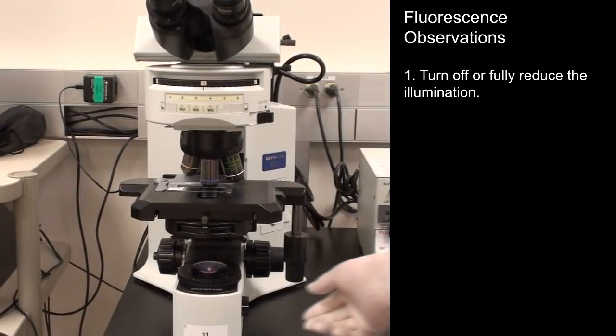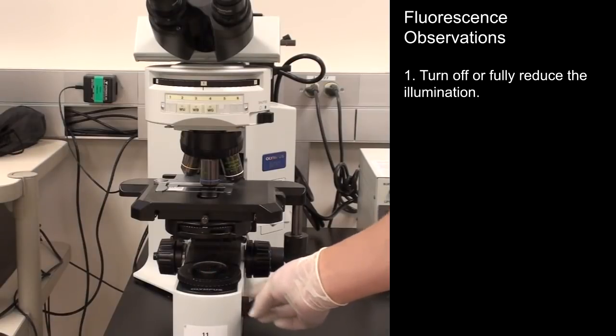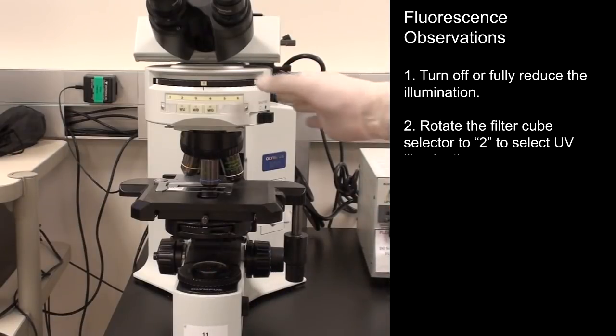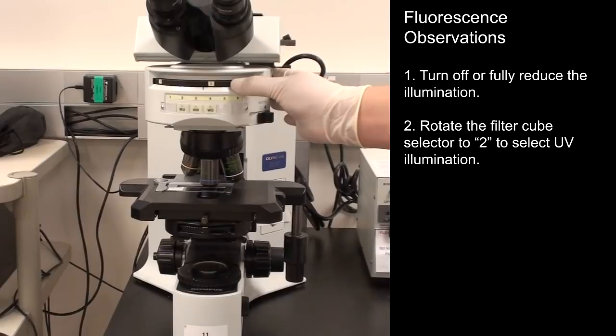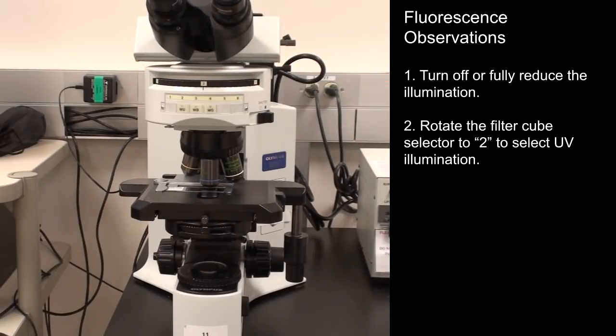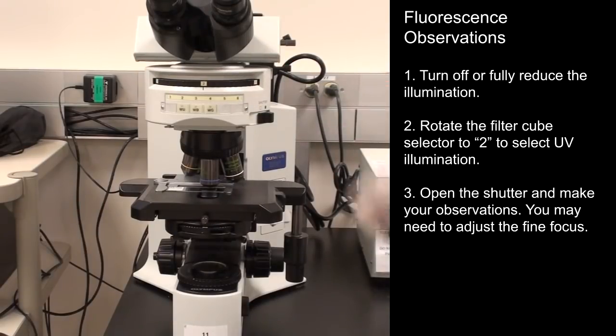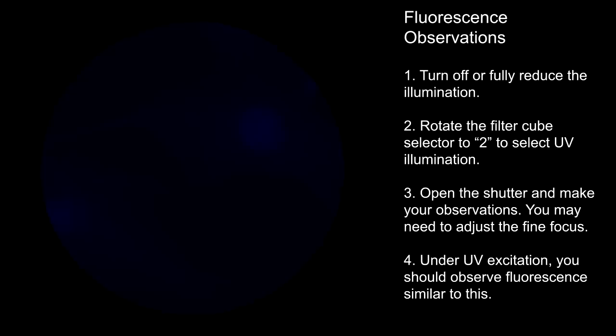You are now ready to begin your fluorescence observations. Turn off or fully reduce the illumination. Rotate the filter cube selector to 2 to select UV illumination. Open the shutter and make your observations. You may need to adjust the fine focus. Under UV excitation, you should observe fluorescence similar to this.